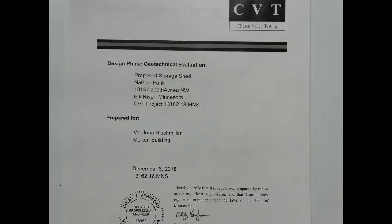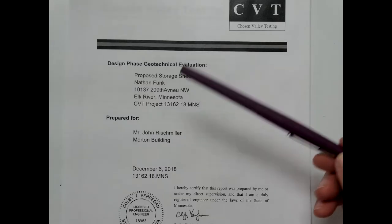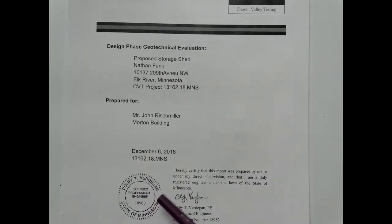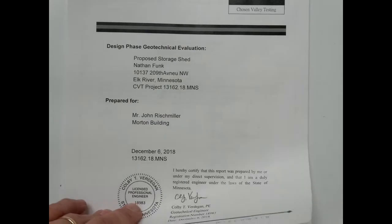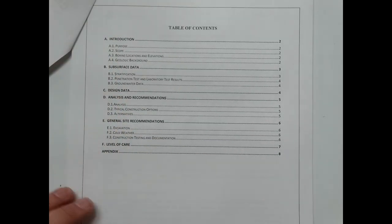In this particular case we have a very simple project to look at. It's a proposed storage shed up in Elk River, Minnesota, performed by Chosen Valley Testing. This is executed by a licensed professional engineer, in this case Colby Verdian. He's been commissioned to look at a structure, and you'll see in the report there's generally an introduction — the purpose of the study, the scope, what was done, and then most importantly where the borings and soil samples were taken.